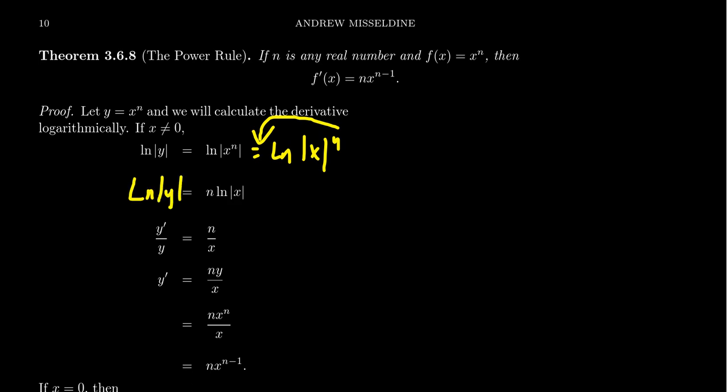So then let's take the derivative of both sides with respect to x. The left-hand side will become y prime over y, like we always get when we do logarithmic differentiation. The right-hand side, because we have this n times the natural log of the absolute value of x, we can factor out the n. It's a constant multiple. So we take the derivative of the natural log of the absolute value of x, but that's just equal to 1 over x. So we get n times 1 over x, which gives us n over x.